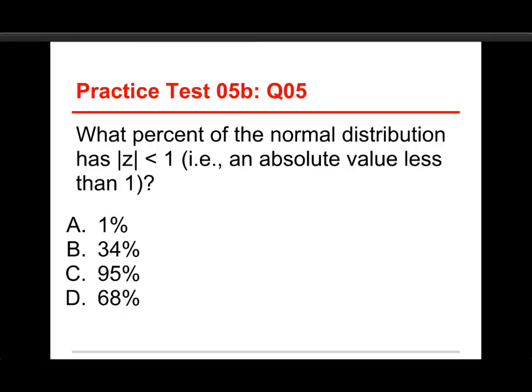The last one in the second pretest is what percent of the normal distribution has a z-score of less than one? That is an absolute value of less than one. Again, that's what those vertical bars mean. It's an absolute value, so you ignore the plus or minus. The choices are 1%, 34%, 95%, or 68%.